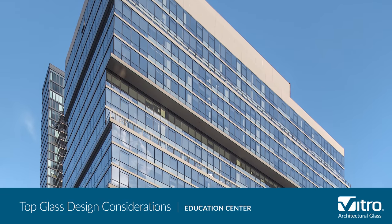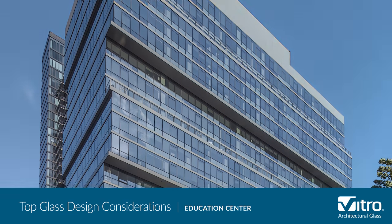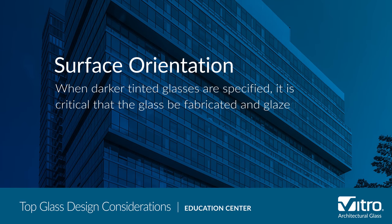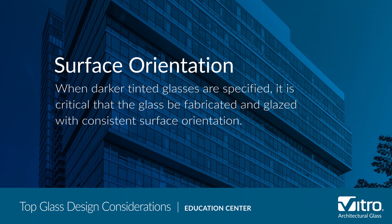Next is surface orientation. As flat glass is produced in the float glass process, it ends up with a tin side that contacted the liquid tin and an air side. When darker tinted glass such as gray light tube glass is specified, it is critical that the glass be fabricated and glazed with a consistent surface orientation in order to achieve a consistent appearance.